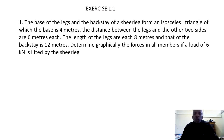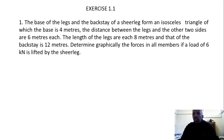Exercise 1.1 from the book of Kendrick Tewikens states that the base of the legs and the backstay of a Shell Leg form an isosceles triangle of which the base is 4 meters, and the other two sides are 6 meters each. The length of the legs are 8 meters and that of the backstay are 12 meters. We need to determine graphically the forces of all members if a load of 6 kN is lifted by the Shell Leg.